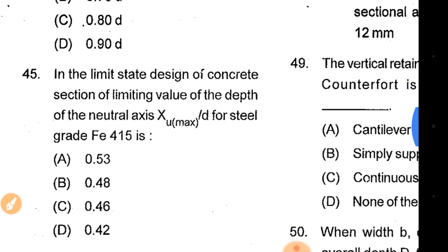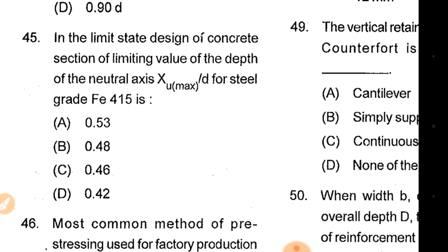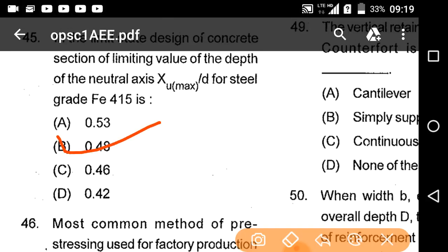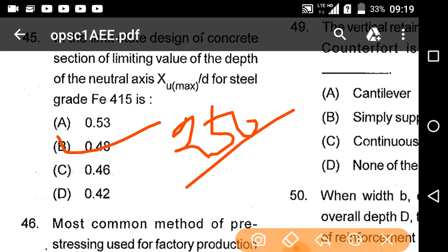In limit state design of a concrete section, the limiting value of neutral axis depth ratio is 0.415D for Fe415, 0.48D for Fe250 grade, and 0.53D for Fe250.